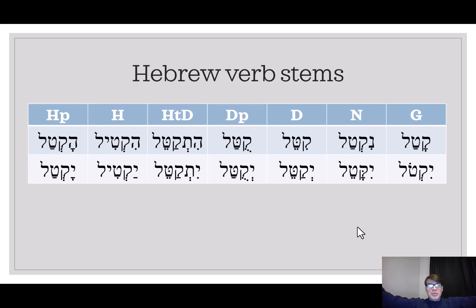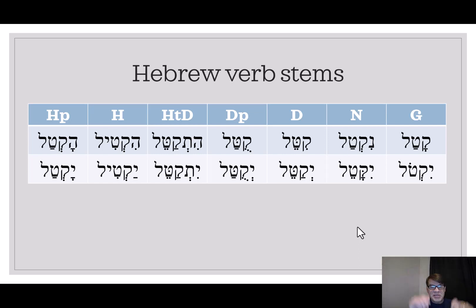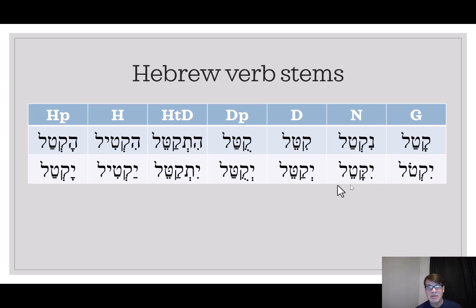I want to systematize the third masculine singular forms of the seven basic stems of Hebrew in the two basic tenses. The first row is the perfect, and the second row is the imperfect.